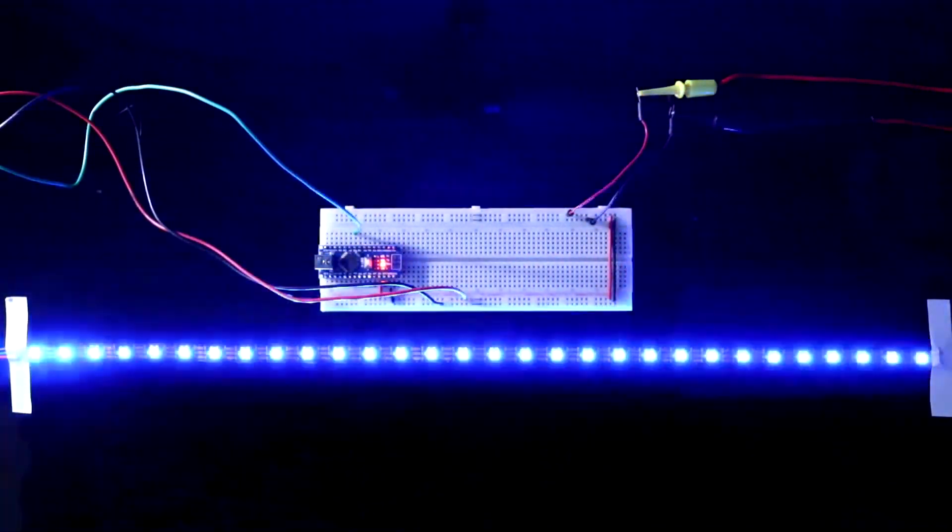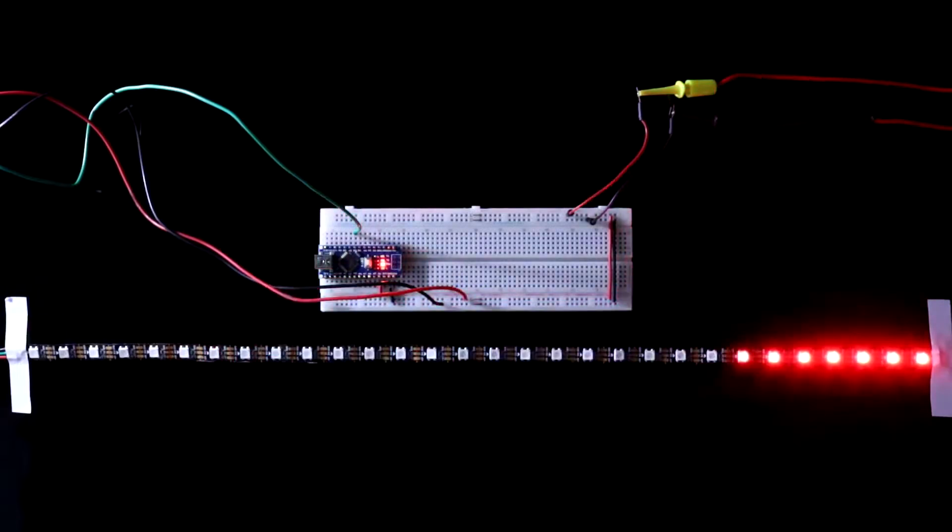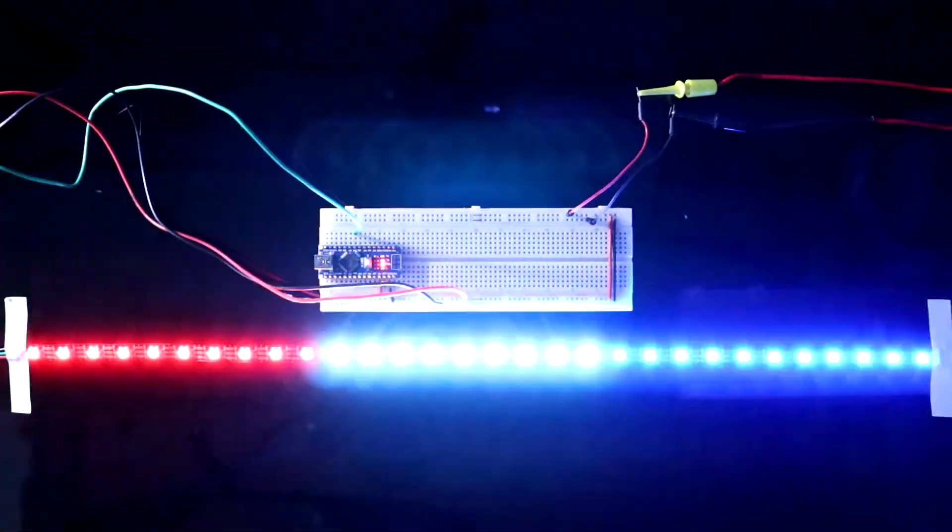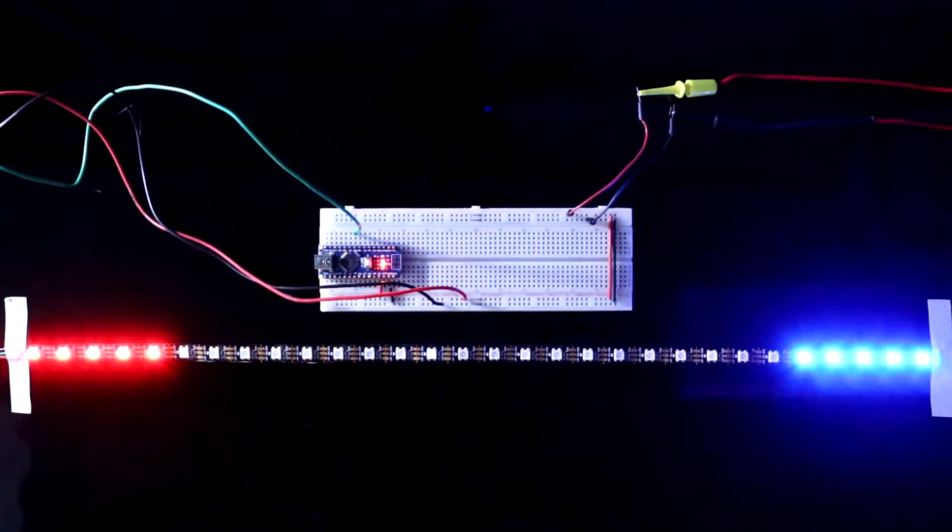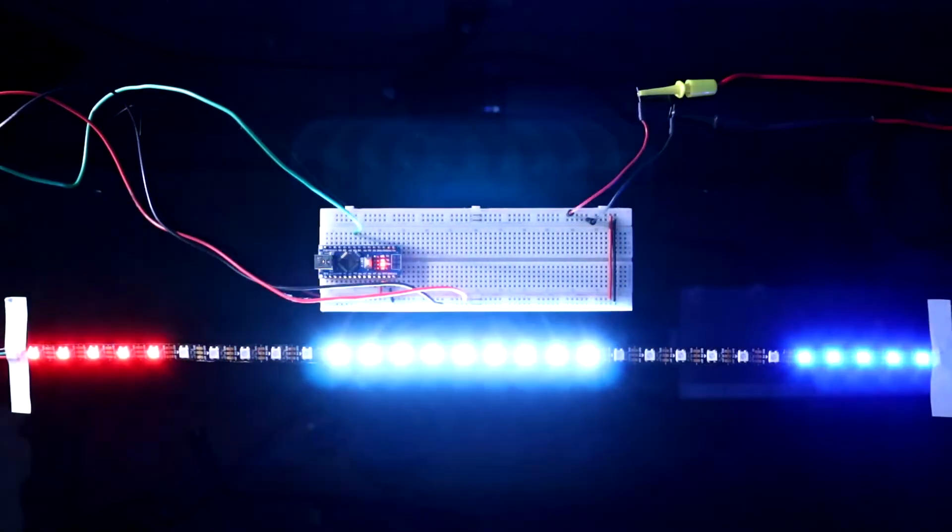Here the total number of LEDs is 30. And I already uploaded video on how to make police siren using UM3561 or IC555.